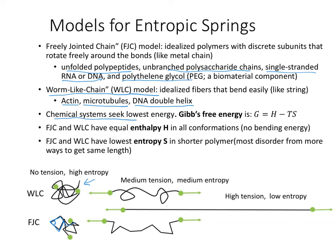Chemical systems seek the lowest energy. Gibbs free energy is the enthalpy — referring to the bending energy — minus the temperature times the entropy, which is related to the disorder and the number of conformations that can still give the same length. Because force is the derivative of the energy landscape, as these go to higher energy when elongated, it takes force to reach that higher energy state. Under no tension, they're balled up; medium tension, somewhat elongated; and it would take extremely high tension to completely unfold them. In the next video, we'll talk about the mathematical descriptions of worm-like chains.